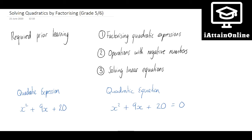I just want to distinguish between a quadratic expression and a quadratic equation. A quadratic expression is just a collection of letters and numbers, and the highest power of the letter is squared. An expression does not equal anything, whereas an equation does, so a quadratic expression can become a quadratic equation by making it equal to something — in this case it's equal to zero.